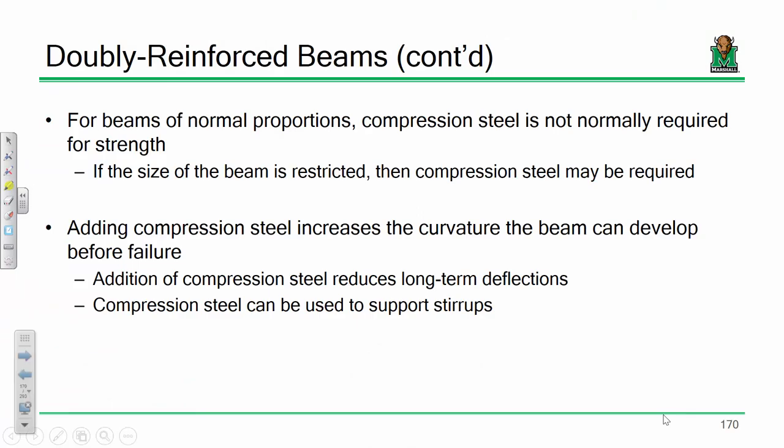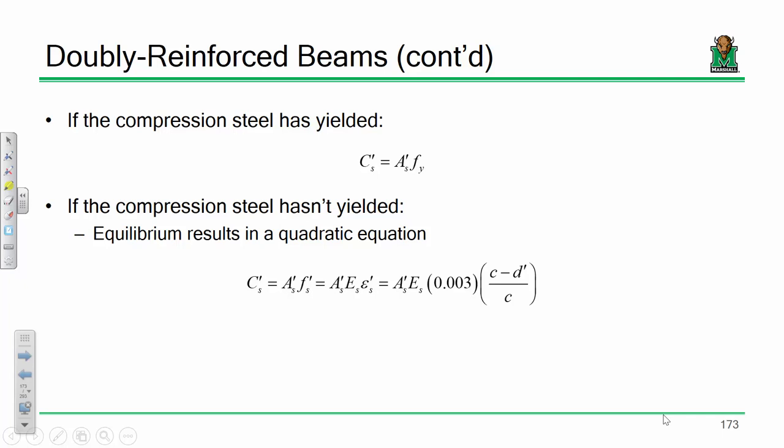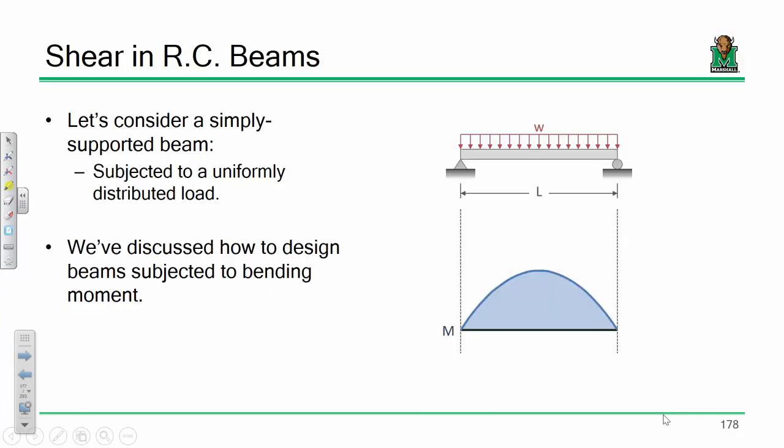So first off, going back to my discussion, why would you include compression steel anyways? Well, the first reason is that compression steel is generally there anyways, and the easiest way to explain that is to skip ahead a little bit.